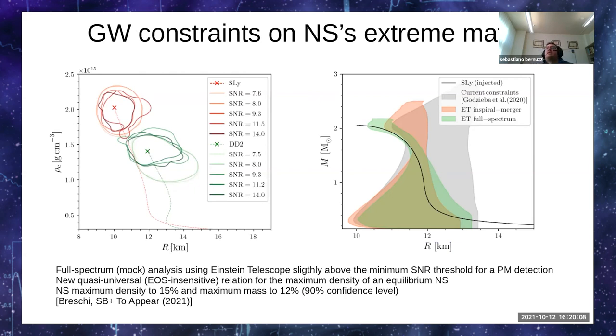One might expect that the observation of a post-merger signal could carry some information about the extreme densities that are reached in the remnant, which are much higher than the density of the initial components. Indeed, this is what happens.